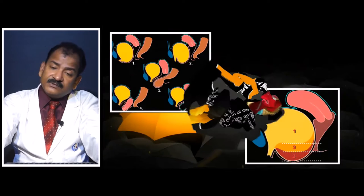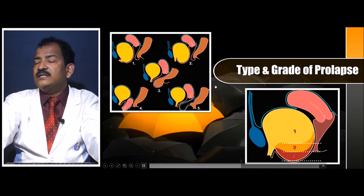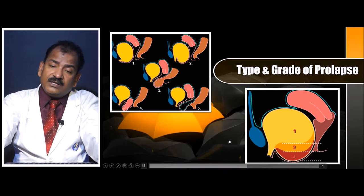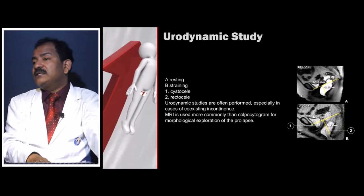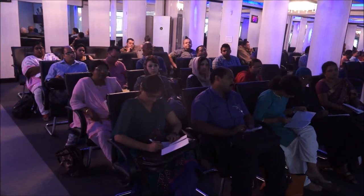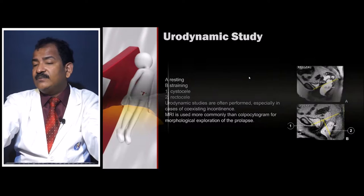There are different types of prolapse: cystocele, rectocele, enterocele, and different grading — grade 0, grade 1, grade 2, and sometimes grade 3 where it is outside the introitus. In all those situations, a urodynamic study is required in which the lower border of the pubic symphysis has to be seen with the coccyx, a line drawn, and if any structure crosses below that line it is a prolapse.